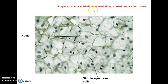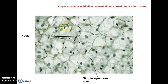It's actually the serous lining, either of the pleural or peritoneal cavity. They've peeled off that thin saran wrap-like serous lining and just laid it on the slide. That serous lining is made up of simple squamous cells, so there you can see those nice flattened cells laying on the slide with their nuclei — one of the most beautiful views you can get of a simple squamous epithelial tissue.